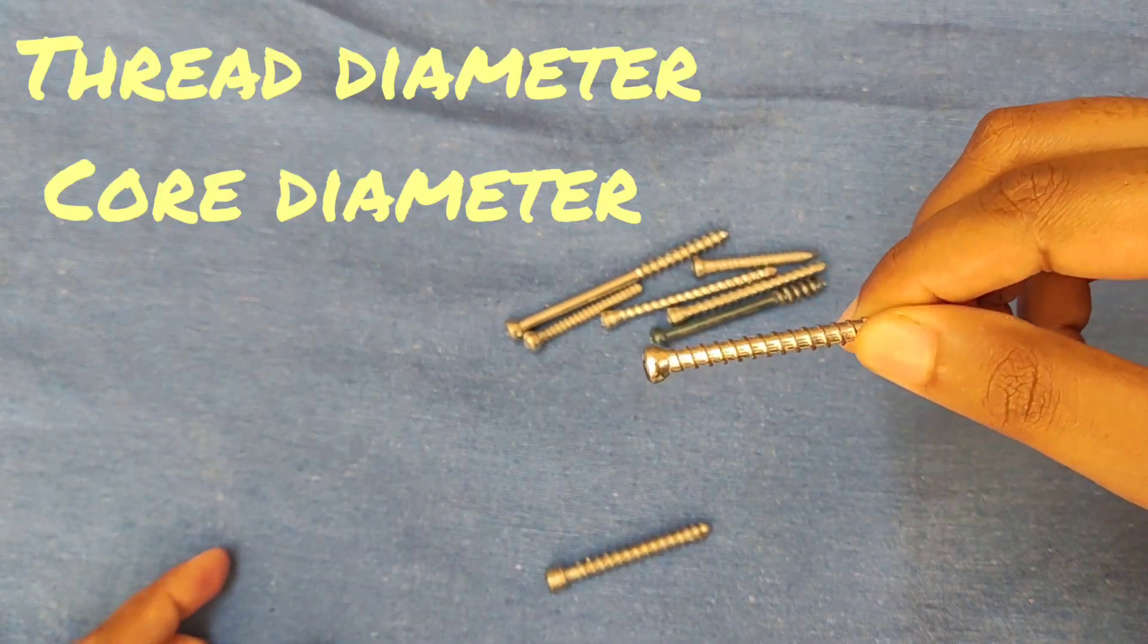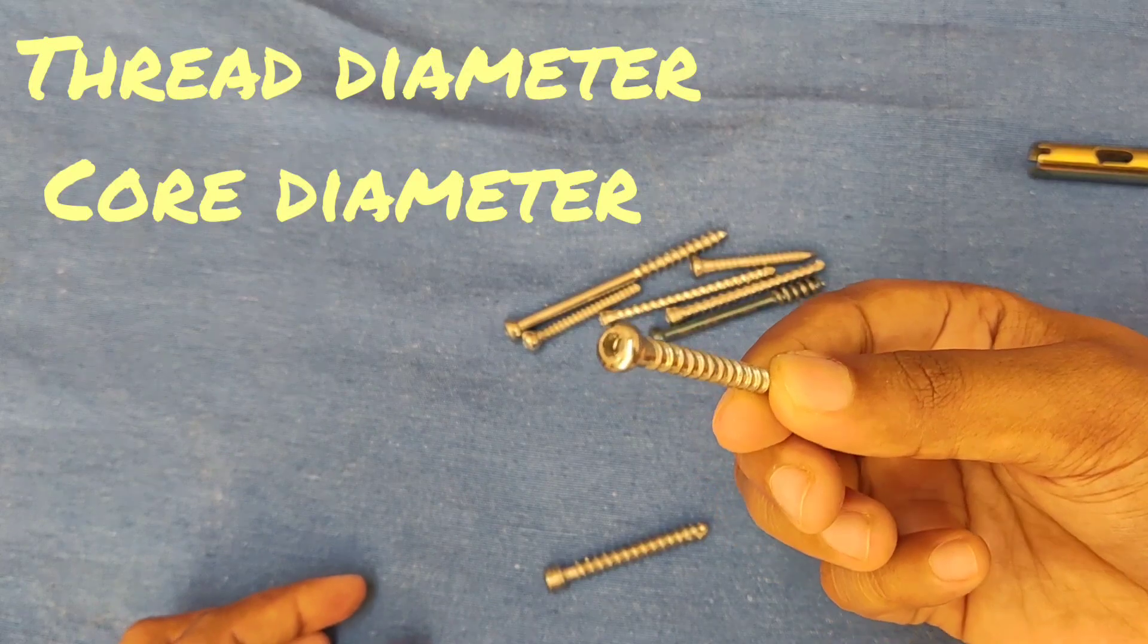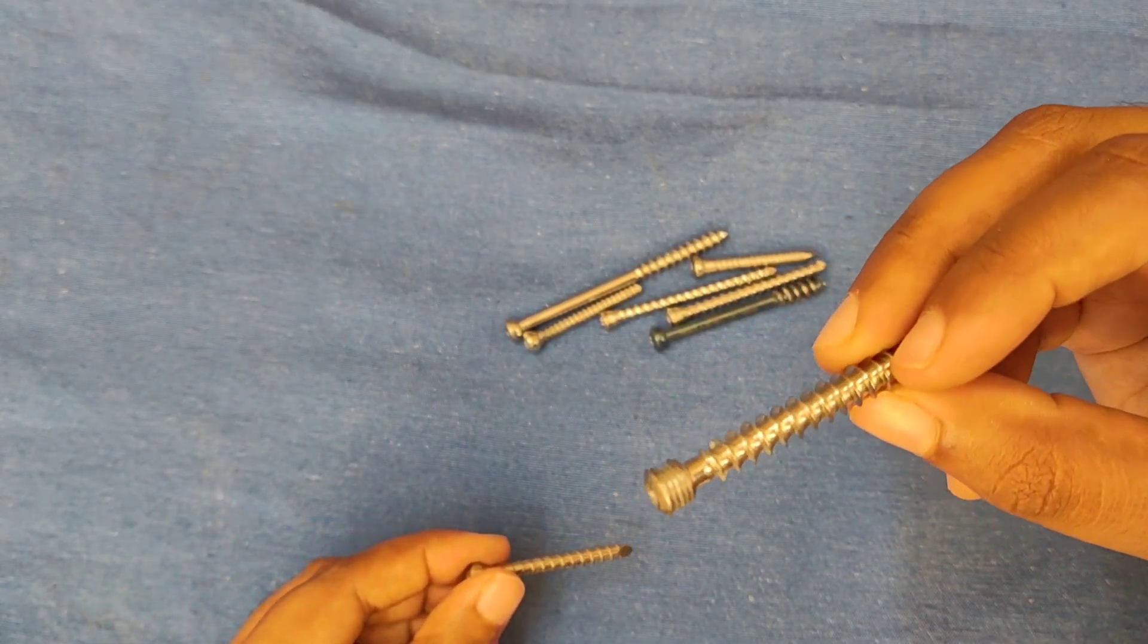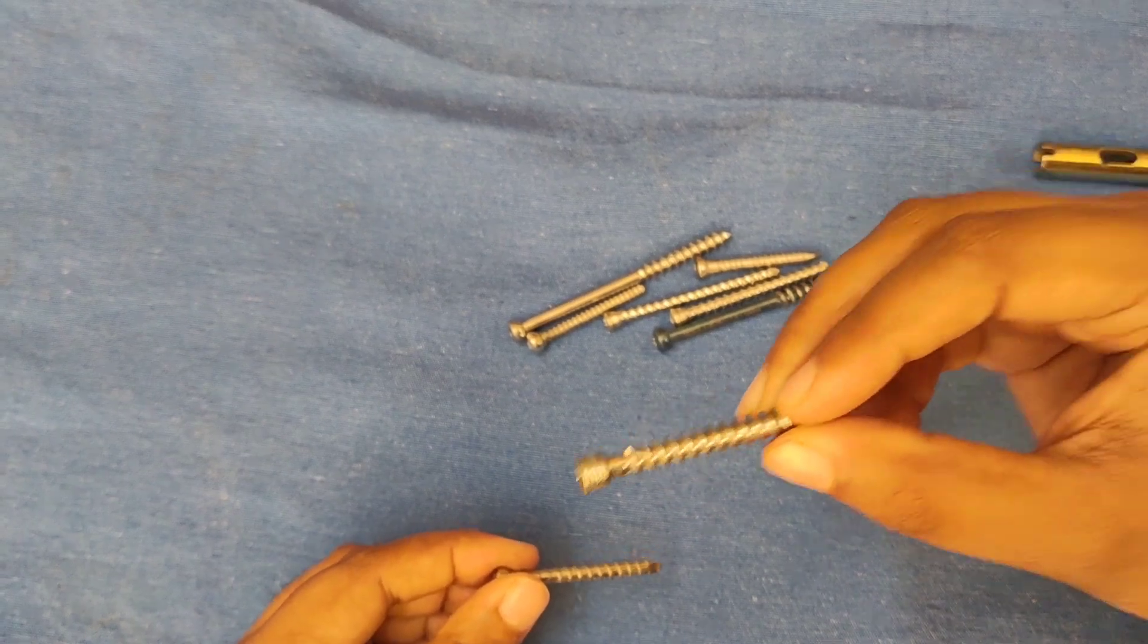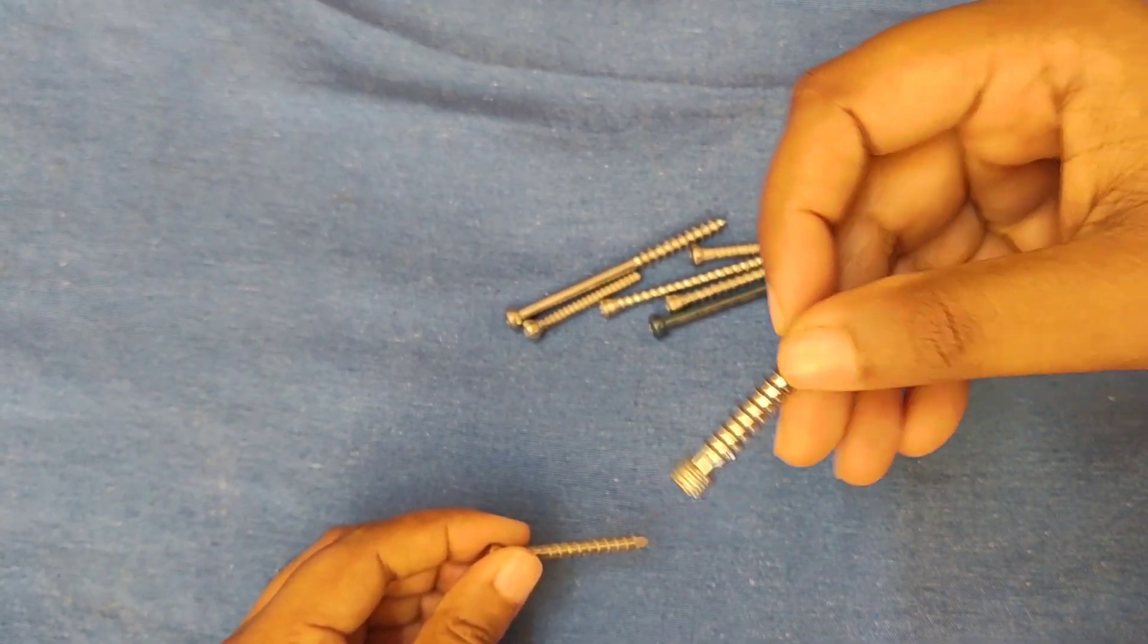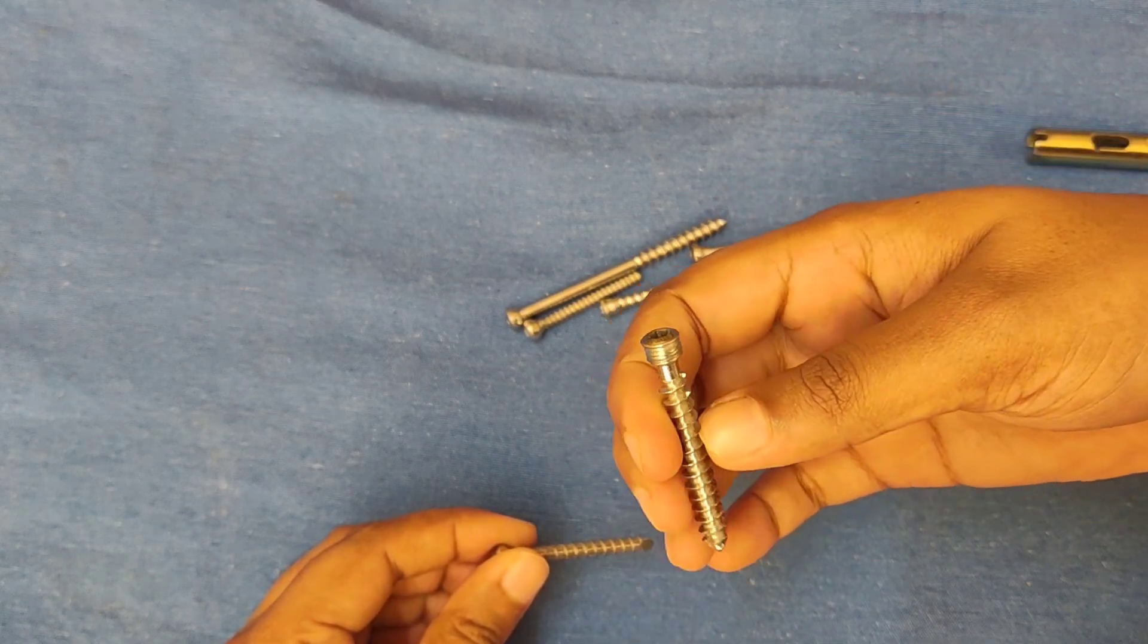Thread diameter represents diameter of screw, and core diameter is the narrowest diameter and weakest part of screw. Pitch is the distance between two adjacent threads. Lead is the distance traveled by screw in one turn.